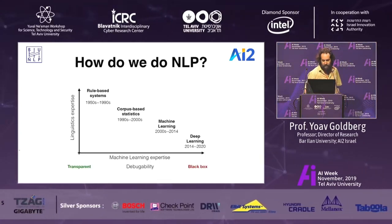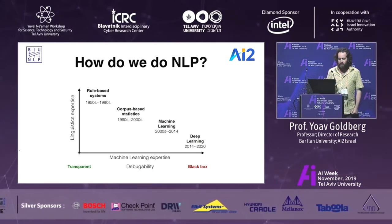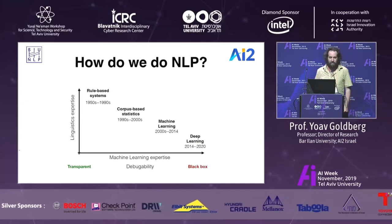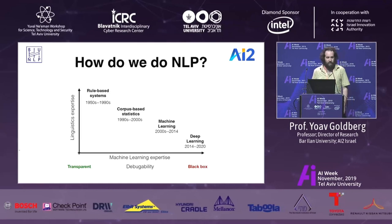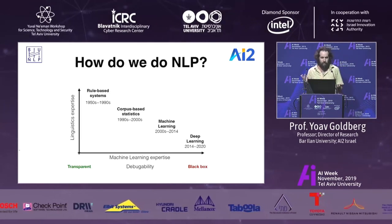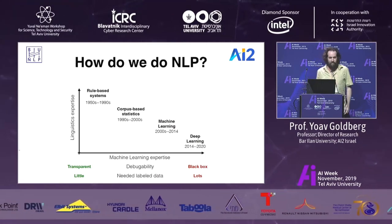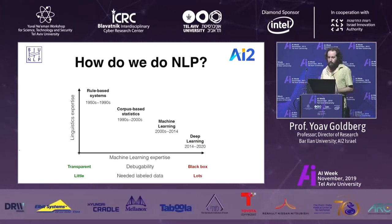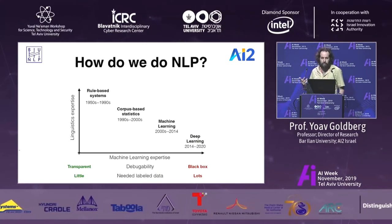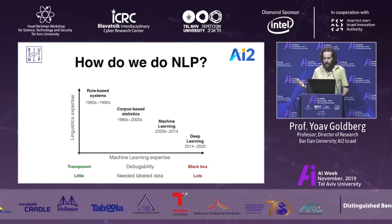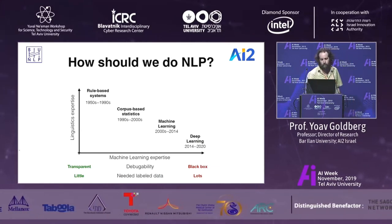There's more to this progression. It's also about transparency — we became much less transparent. Now the models are black boxes. They used to be transparent, maybe complex, but at least you knew what was going on. And the other issue is that now we need a lot of data. When you just wrote patterns, you had no need for data. Statistics you could compute over small corpora. Now with deep learning, we really need lots of data to make things work.